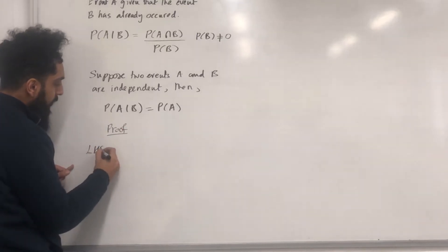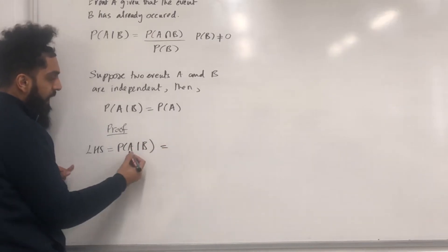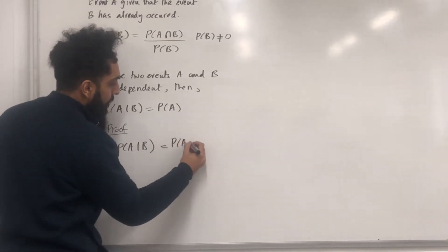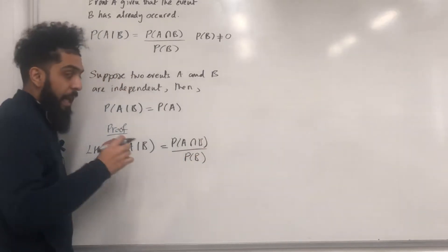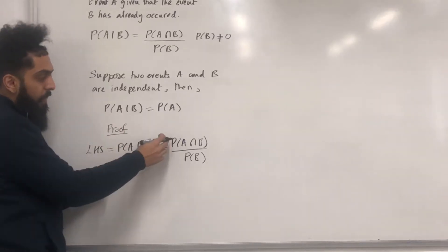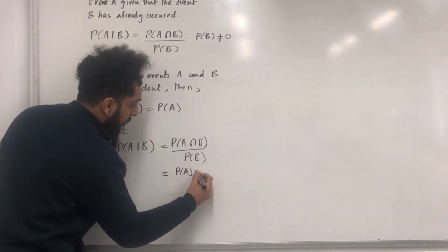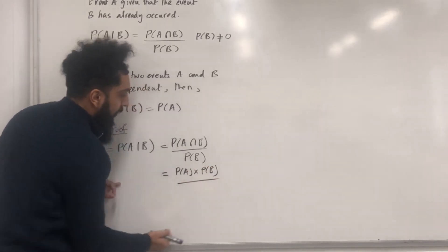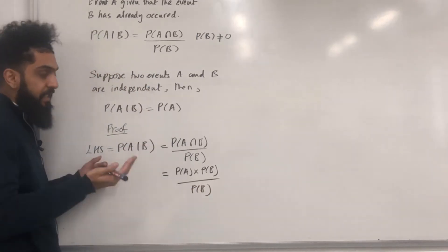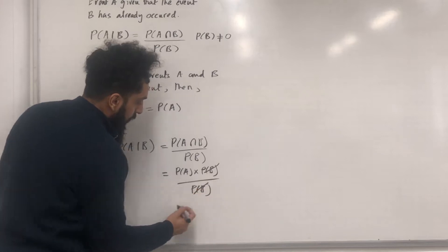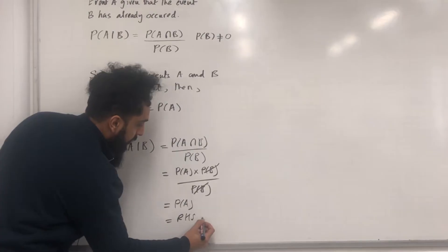Let's start off from the left hand side, which is probability A given B. The formula for this is probability A intersect B divided by probability B. Now, because the events A and B are independent, we know that probability A intersect B is the same as probability A multiplied by probability B, divided by probability B. We can cancel the probability B, and so we end up with probability A, which is equal to the right hand side. End of proof.